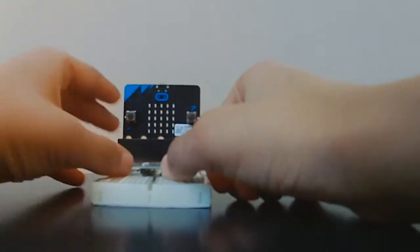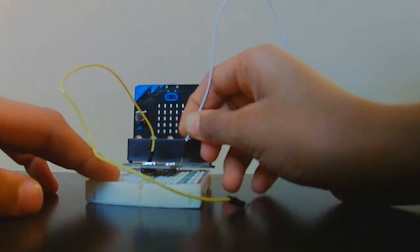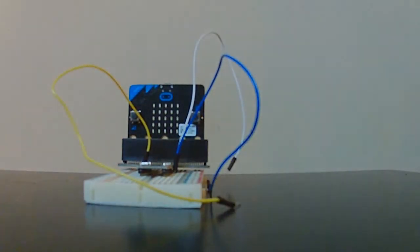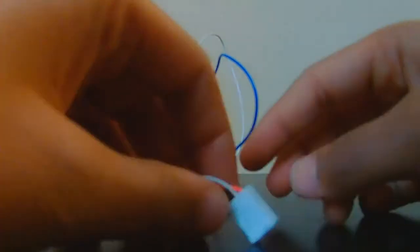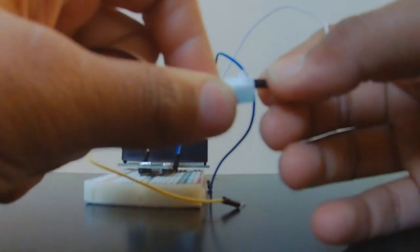And then next, you want to plug in all of your wires to pin out zero, ground, and three volts. And I will show you a diagram on where to plug it in on the servo. And just plug it into your servo from there.